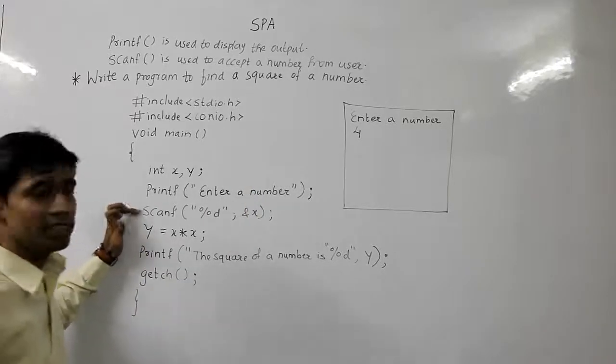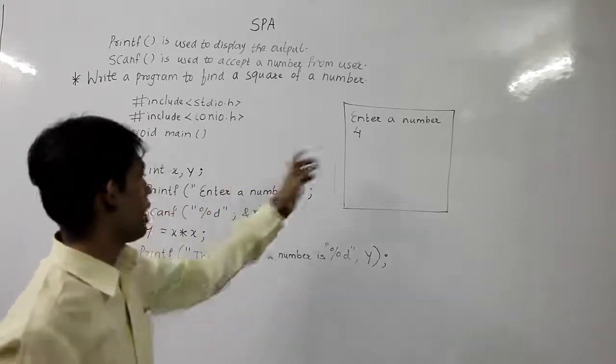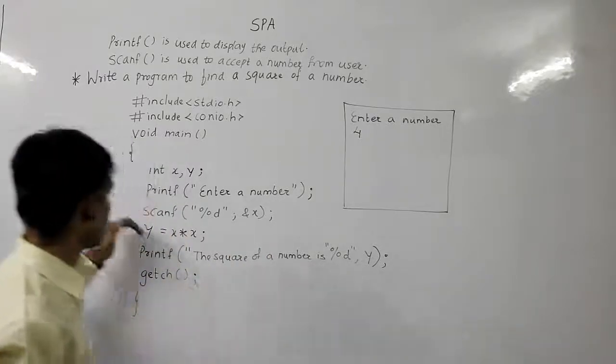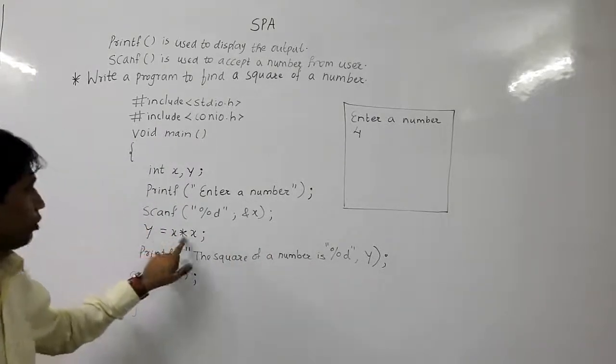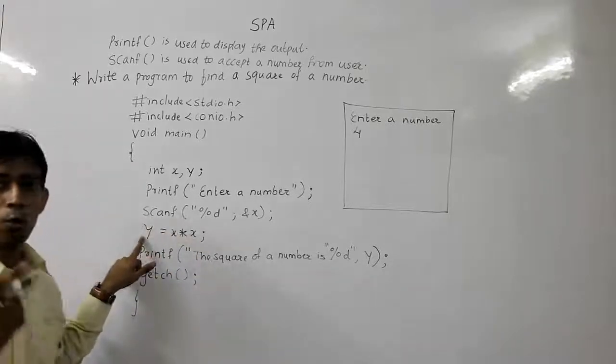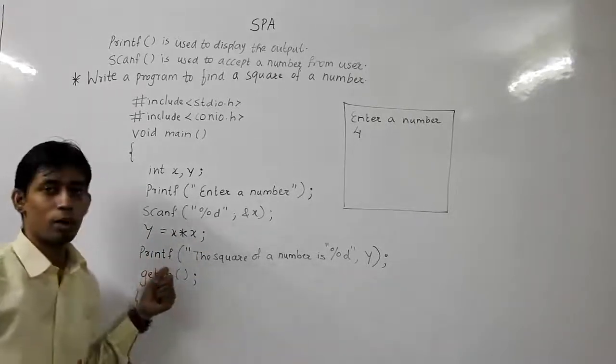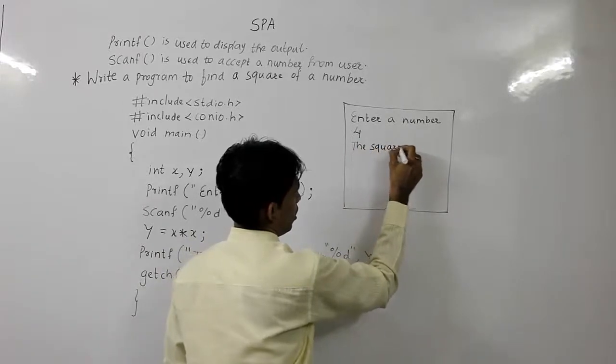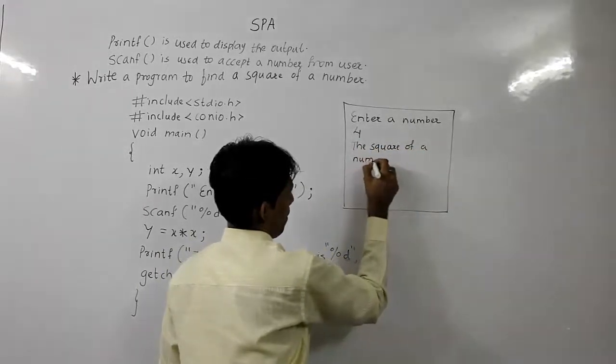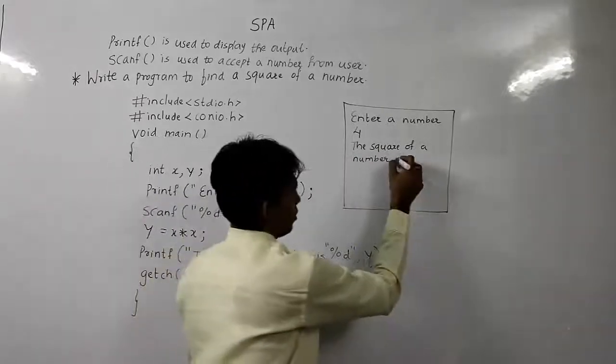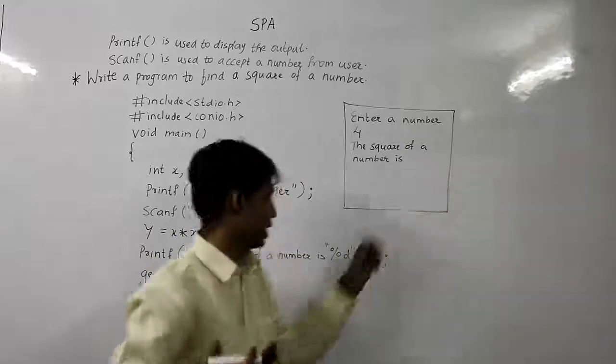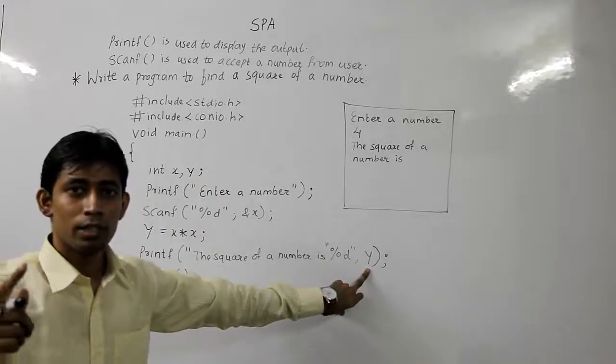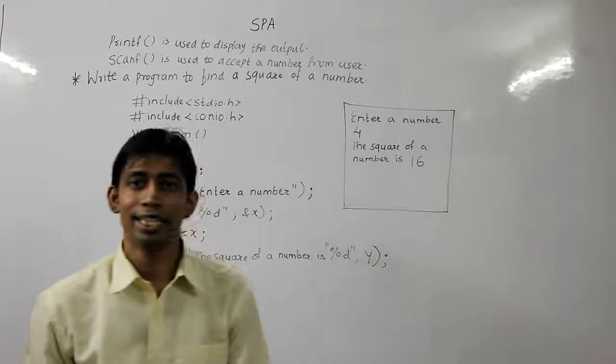So, scanf. Computer's mind is here. He has got prepared for an integer value. And, you have inputted 4. He has stored it in x. Next, computer has the calculations. 4 into 4 is 16. It has been stored in y. Now, computer is here. He will write this. The square of a number is. The value is supposed to enter or print over here. Is again an integer. Which is even specified over here. %d. And, what is the value in y stored? It is 16. So, it will print 16.